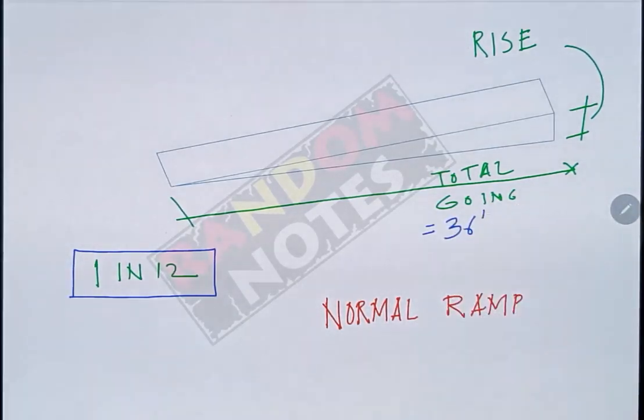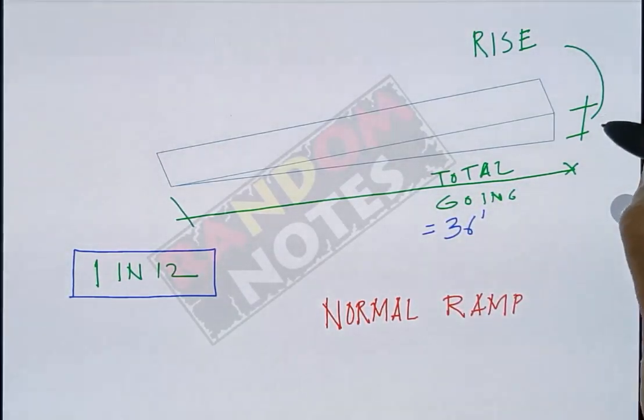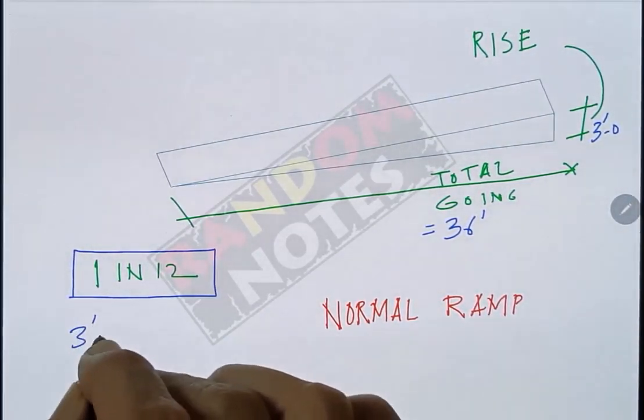So for a 1 in 12 gradient if I have to rise 3 feet then the total going required will be 3 into 12 which is 36 feet.